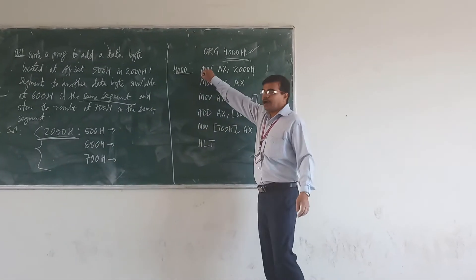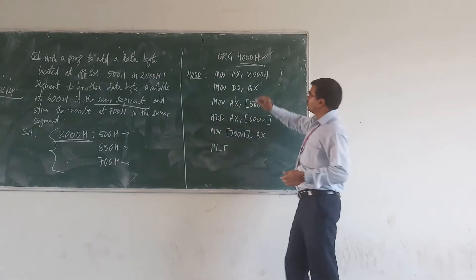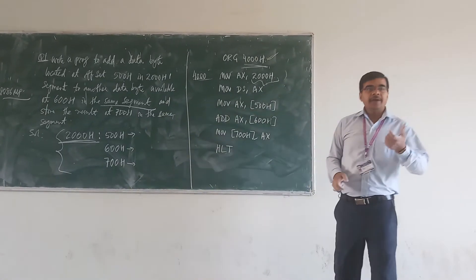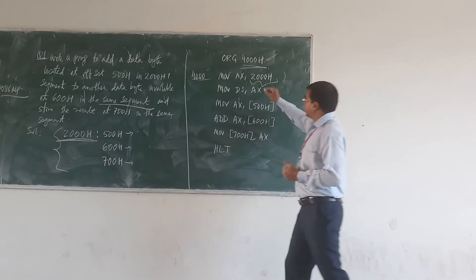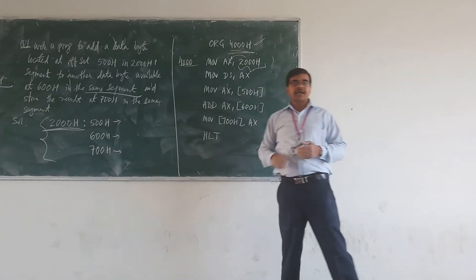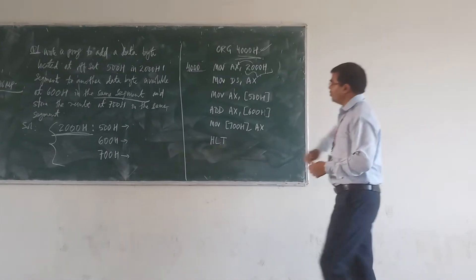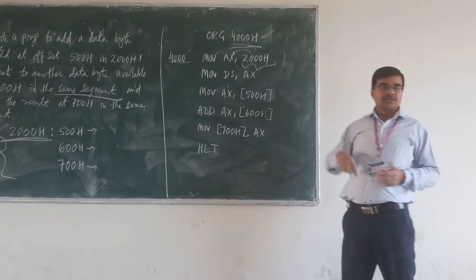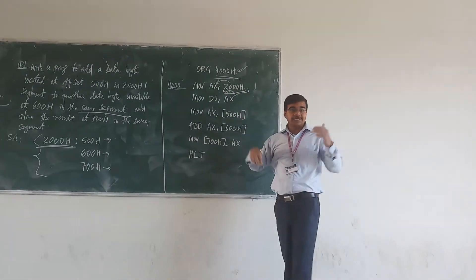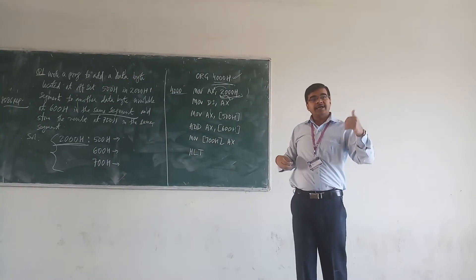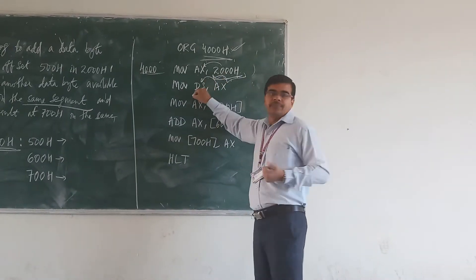Here we write MOV AX, 2000H. 2000H is the segment location that we are assigning to the AX register. AX is a general-purpose register. Then we write MOV DS, AX — whatever segment value is now in AX, which is 2000H, is transferred to the data segment register DS.